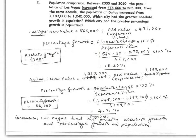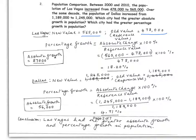Now we look at problem 2. You can pause the video to read the question carefully. The population of Las Vegas increased from a reference value of 478,000 to a new value of 565,000. In Dallas, the population changed from 1,189,000 to 1,245,000, which is actually a decrease in population.